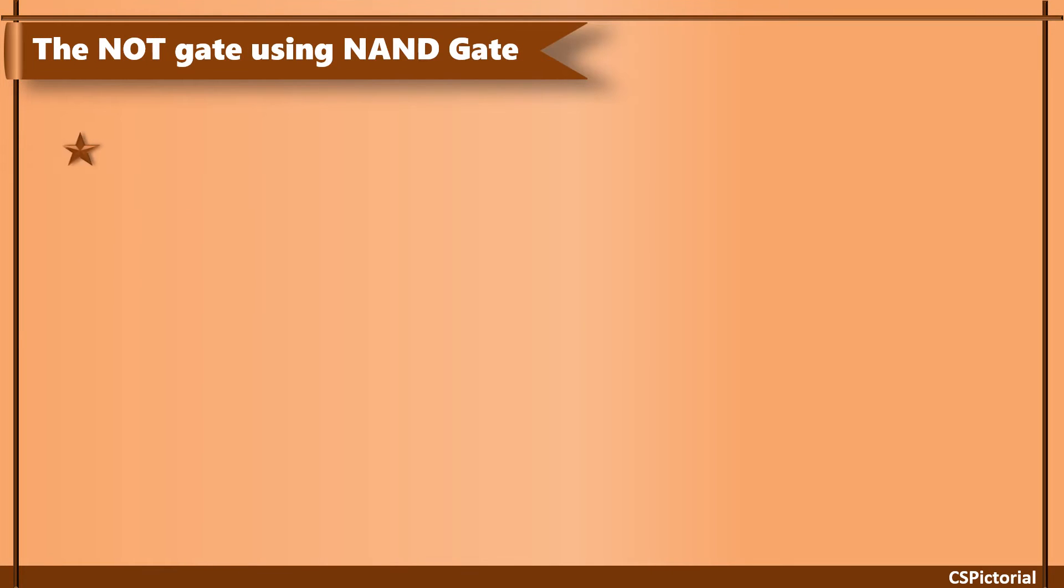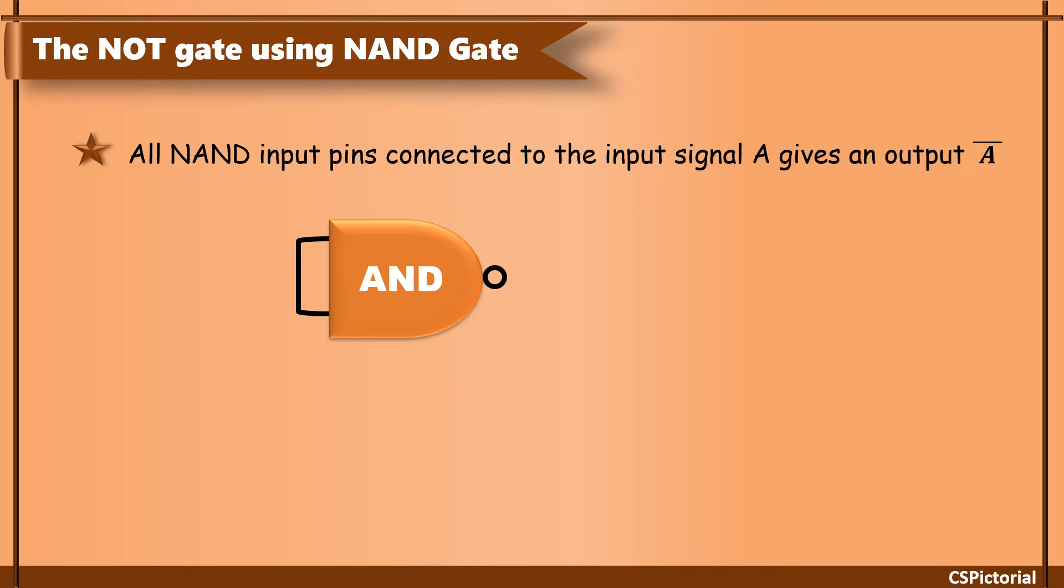The NOT gate can be implemented with NAND gate by connecting all the NAND input pins to the input signal A. This gives an output of NOT gate A bar.